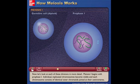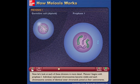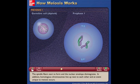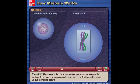Meiosis I begins with prophase I. Individual replicated chromosomes become visible, and each chromosome consists of identical sister chromatids joined at their centromeres. The spindle fibers start to form and the nuclear envelope disintegrates. In addition, homologous chromosomes line up next to each other and an event unique to meiosis occurs.